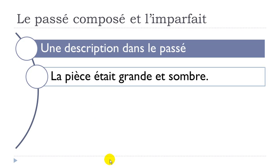The example I took: la pièce était grande et sombre. La pièce means the room, grande means big, sombre means dark. So in that case, you use être — to be — and you use it at the imparfait form to make this description.